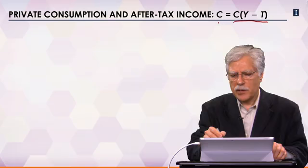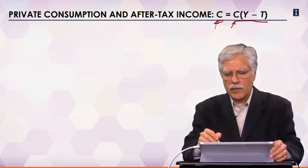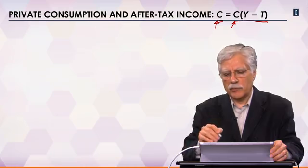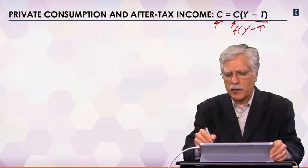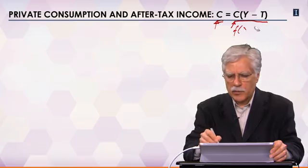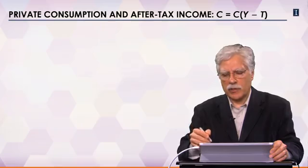I'm going to write the consumption function as c of (y minus t). This expression tells us that consumption is a function of income minus net taxes. I'm using the same letter c to represent consumption and also as the name of the function that connects disposable income to the amount people would like to consume. This reduces the number of symbols we need to use. Some might prefer another letter like f of (y minus t), but that introduces too many letters. So let's use c representing consumption as a function of disposable income.